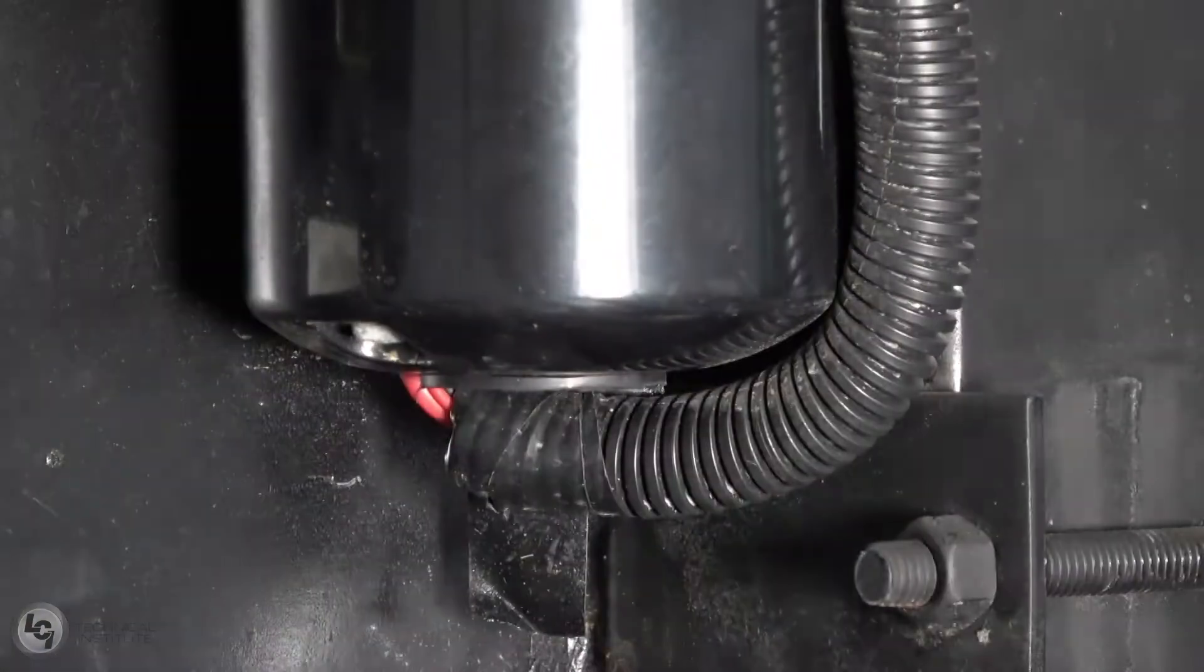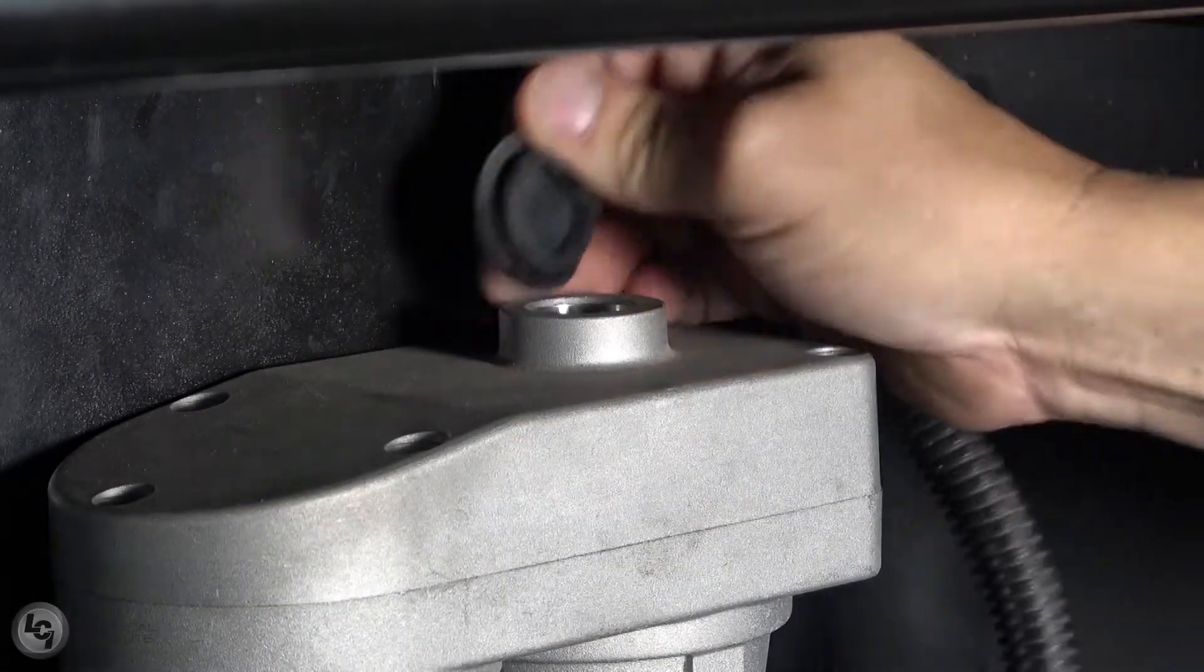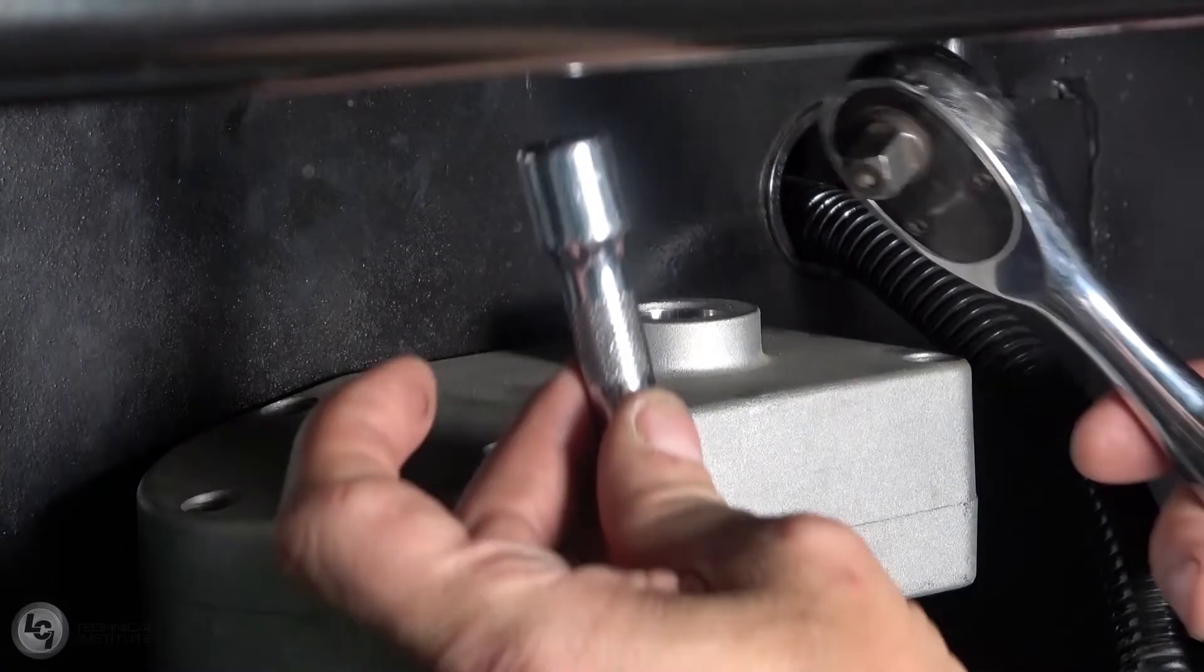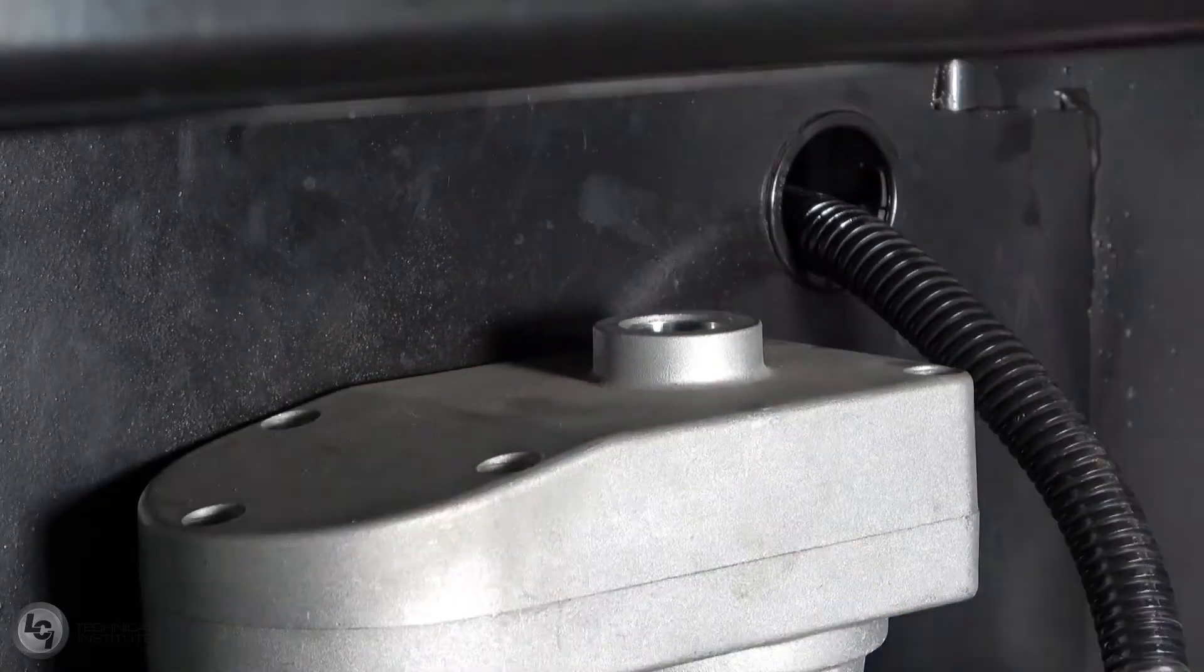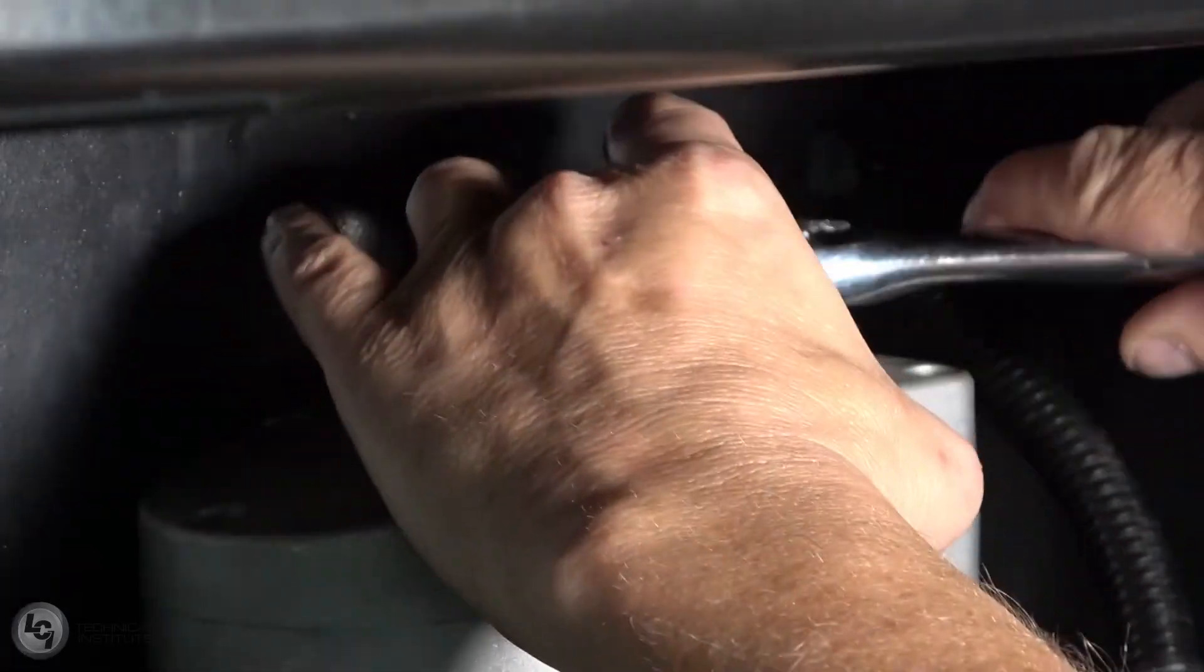The second option for manual override is at the top of the motor. Again, you will remove a rubber plug and, using a ratchet or drill with a 3-8th drive extension, you will manually run the jack up or down.